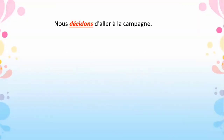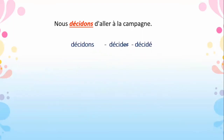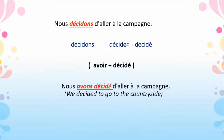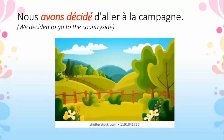The next sentence: 'Nous décidons d'aller à la campagne' — we decide to go to the countryside. 'Décider' is a regular -er ending verb, so cut the -er and add é. Avoir plus past participle gives us: nous avons décidé d'aller à la campagne — we have decided to go to the countryside.